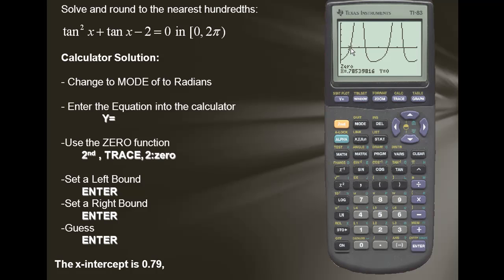To find the next intercept, we'll simply repeat the process. So we'll use the zero function, which is within the calculate. We'll use second and trace. We want the zero, I'll press enter. We want to calculate the zero here, so we'll set a left bound. I'll move the cursor to the left of my zero. I'll press enter. Now I'll set a right bound. I'll press enter. For guess, I'm going to press enter. And we have a zero of 2.03.